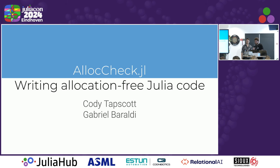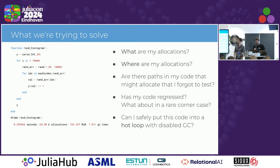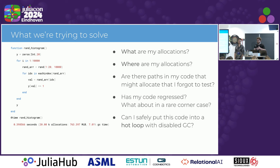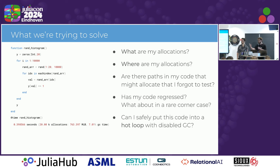I'm Gabriel, and let's dig into it. So what is AllocTrack trying to solve? Basically, if you've written Julia before, if you write allocation-free code, reducing your allocations is the thing that gets drilled into you a lot. And it's sometimes annoying to figure out things like what is my code allocating and where in my code are allocations happening.